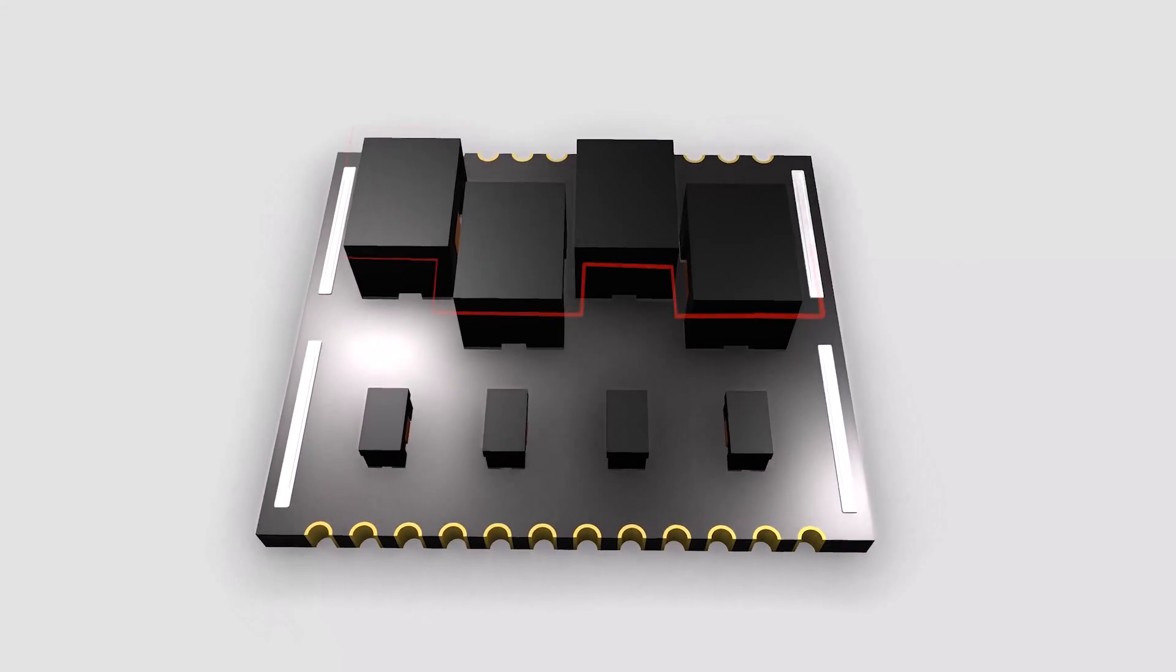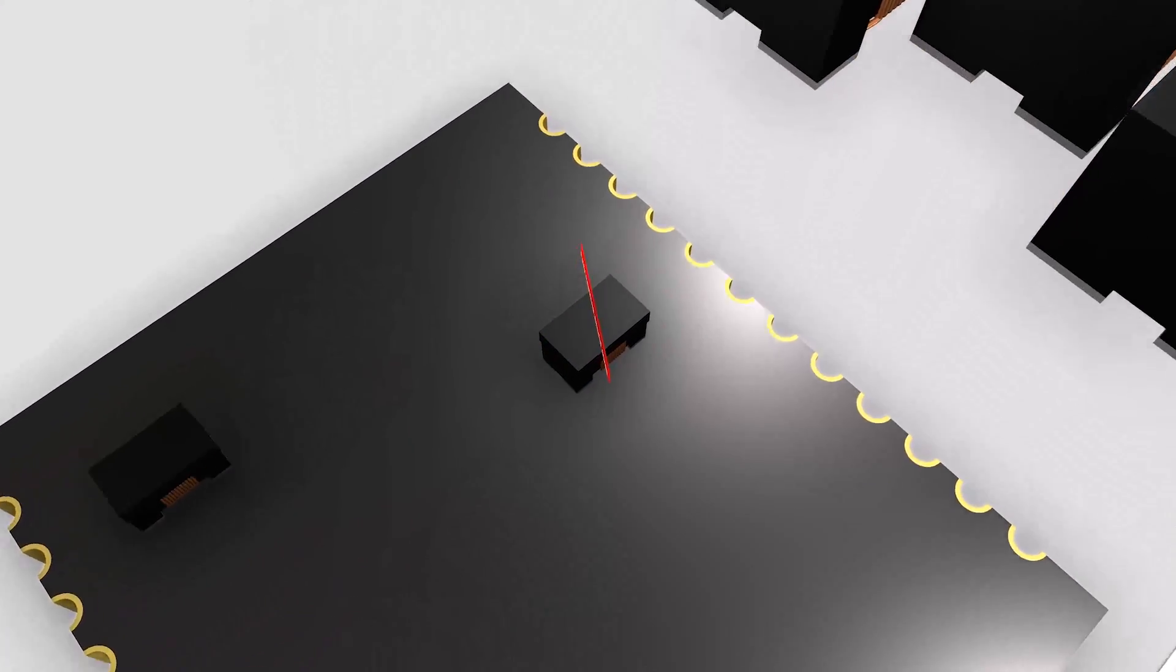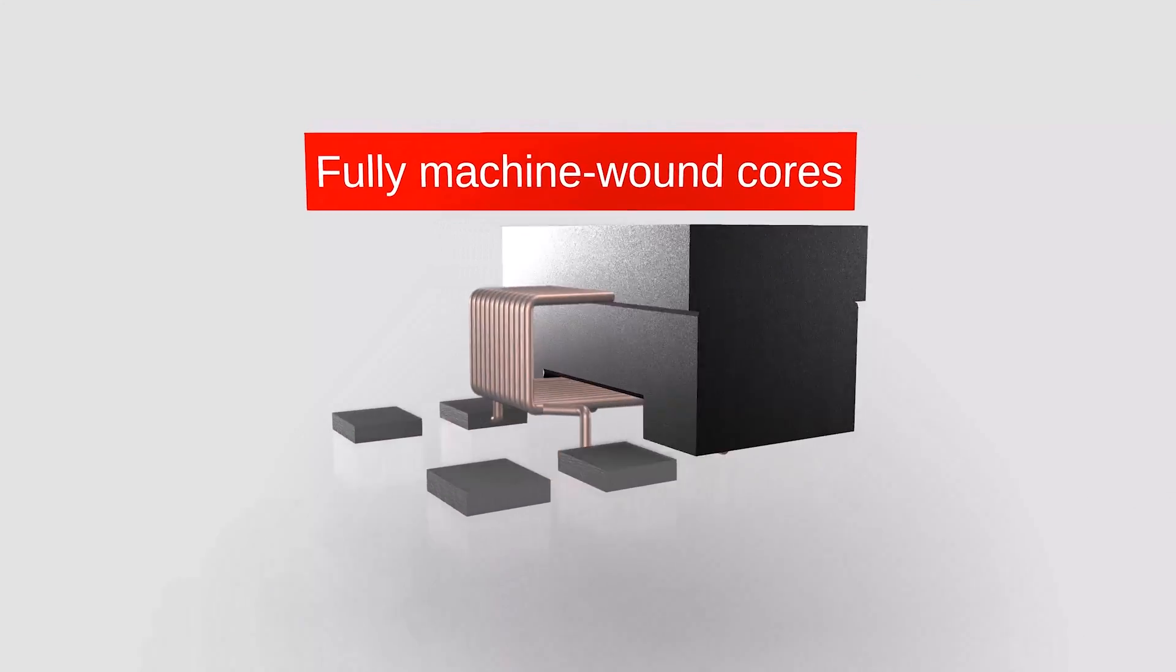The transformers as well as the common mode chokes have machine wound cores with extremely tight tolerances.